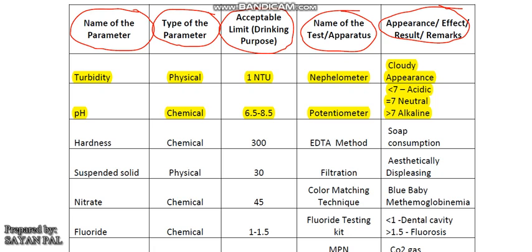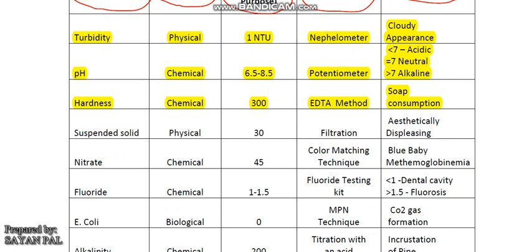Then comes hardness. It is a chemical water quality parameter. Hardness means the concentration of multi-valent metallic cations such as Ca²⁺, Mg²⁺, etc. Its acceptable limit is 300 mg per litre and its cause-for-rejection limit is 600 mg per litre. It is measured by EDTA method with the help of EBT indicator. EDTA means ethylene diamine tetra acetic acid and EBT indicator is eriochrome black T. Hard water means more soap consumption.